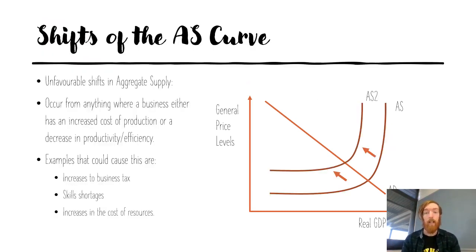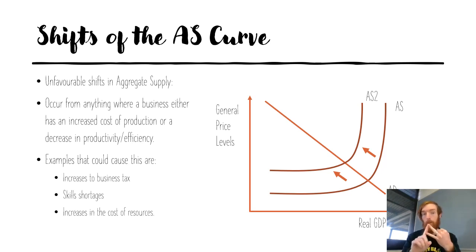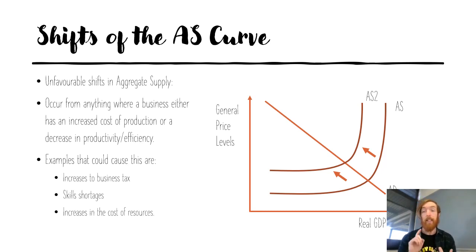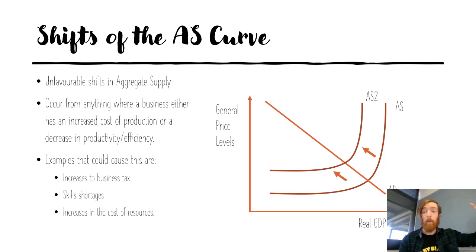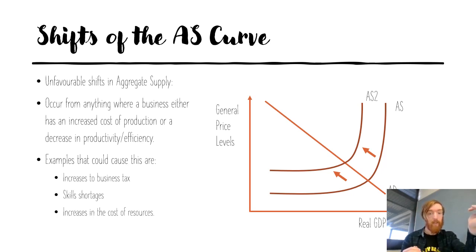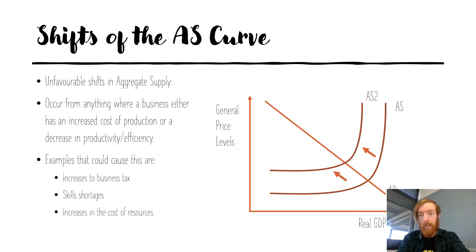Now we're going to look at shifts of the aggregate supply curve. First, unfavorable shifts occur from anything where a business has increased cost of production or a decrease in their productivity or efficiency. An example is increases to business tax — if company tax increases, businesses want to protect their profitability, so they increase their prices to maintain the same level of profits. When the aggregate supply curve moves to the left, less is being supplied at a higher price because they're passing on that higher cost of production to you.